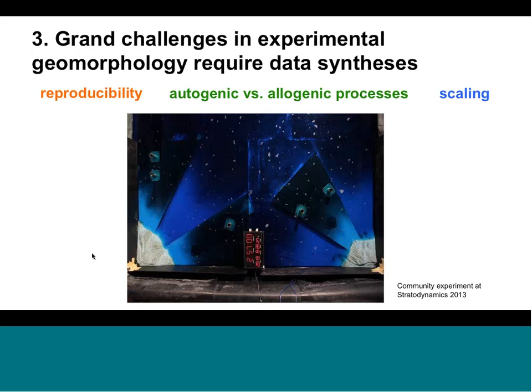The grand challenges in experimental geomorphology and Earth surface processes really require data syntheses, not just single experiments. Some of the main challenges identified in SEN are: reproducibility of experiments — if you set everything up exactly the same twice, will you get the same result? Another is autogenic versus allogenic processes — to what extent are environmental forcings causing the resultant delta or channel as opposed to some internal dynamics?